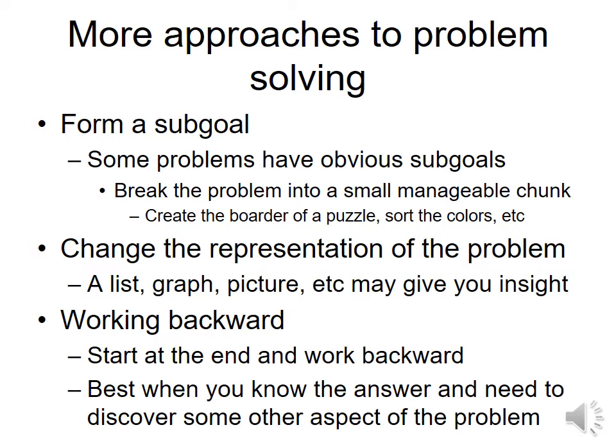Working backwards: this happens when you know the end result but are trying to find a previous unknown. For example: Mickey has $5 on Friday. On Wednesday his sister owed him $3. The Monday before, he owed his mom $2. The day before that he got $1 in allowance. How much did Mickey start with? You work backwards from the answer — 5 minus 3 plus 2 plus 1 — to find the missing starting value.